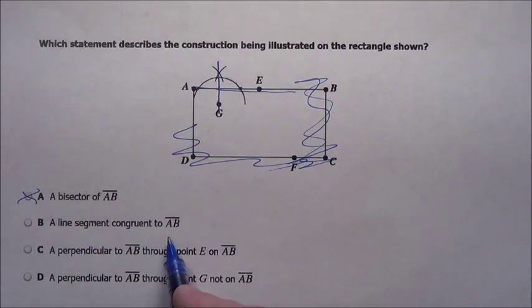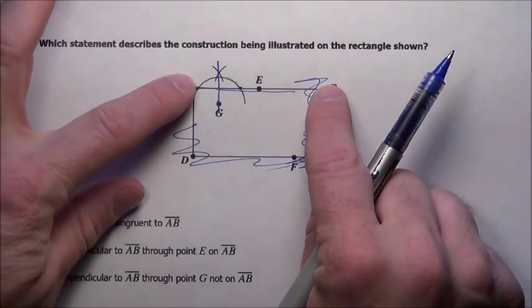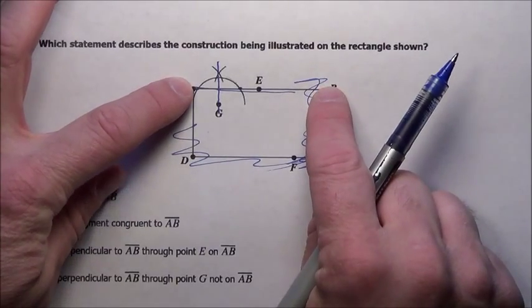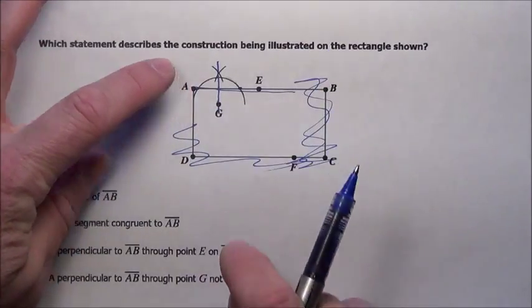A line segment congruent to AB. So are we trying to create, where we're trying to use a measurement and try to create something that's at exact length with what we've done? No.